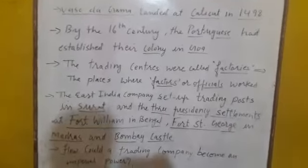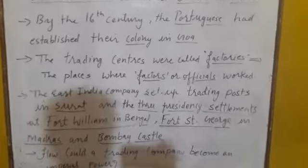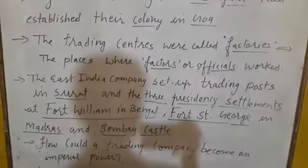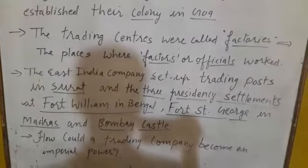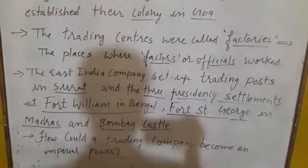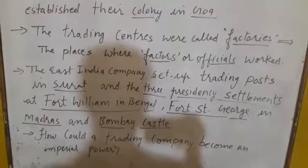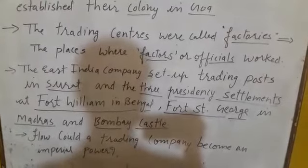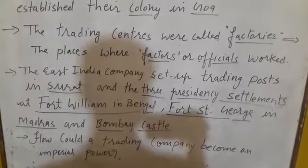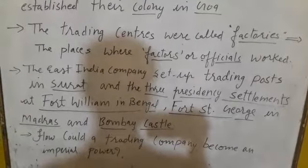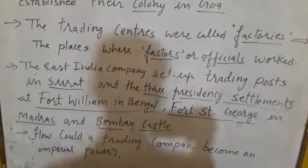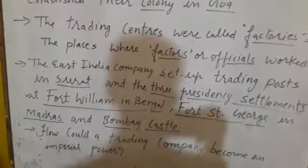Then the East India Company set up a trading post in Surat and three presidency settlements: Fort William in Bengal, Fort St. George in Madras, and Bombay Castle.